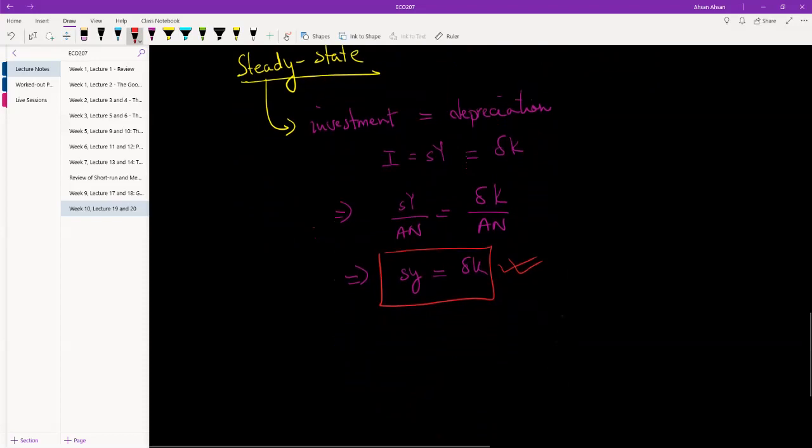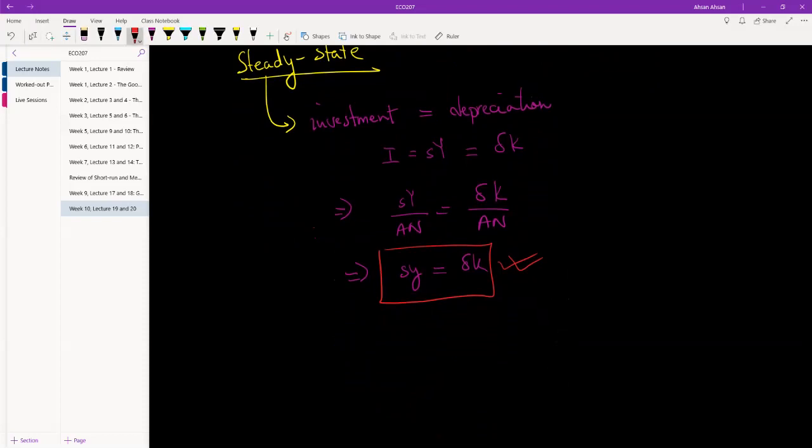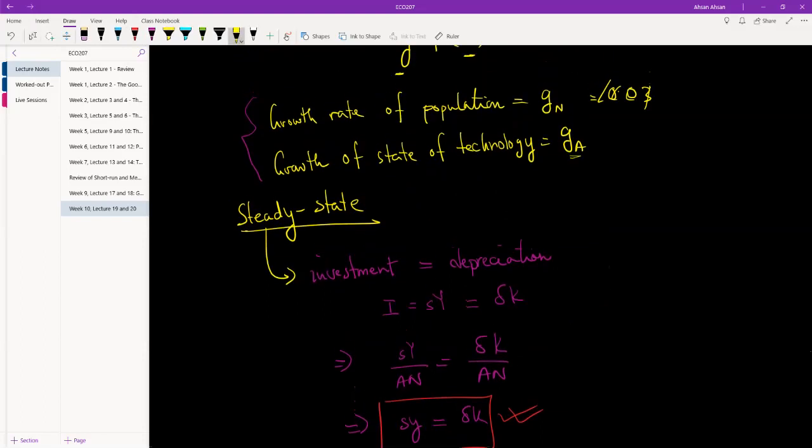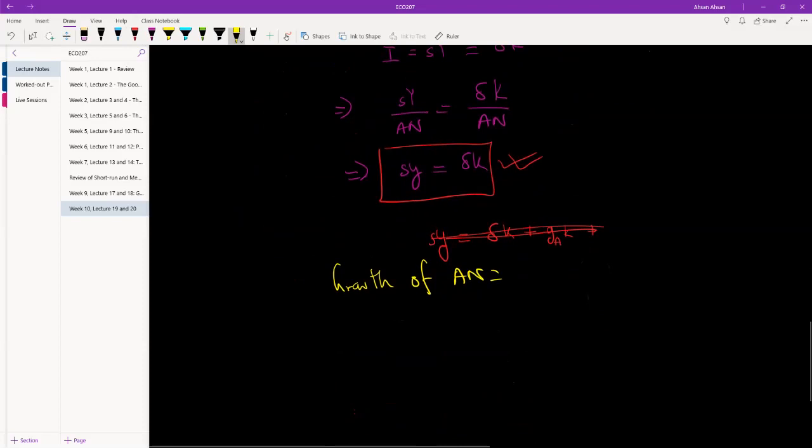The new relationship that we are going to have is this: investment has to equal depreciation plus ga k. Let me write it differently, this will be easier for you guys to understand. Growth of An, we've seen growth of a is this and growth of n is this, so growth of An together is ga plus gn.